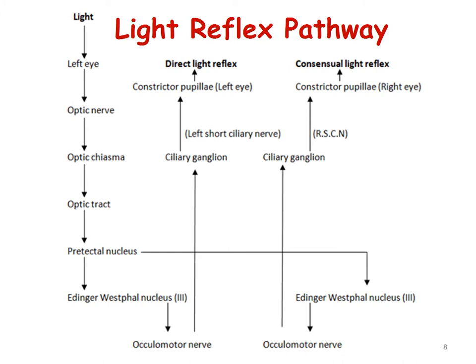And then from there, the third order neuron — the efferent pathway — will be going through the oculomotor nerve to the ciliary ganglia. Once it relays at the ciliary ganglia, via the short ciliary nerves it will go to the constrictor pupillae of the left as well as the right eye, leading to the direct light reflex as well as the consensual light reflex.